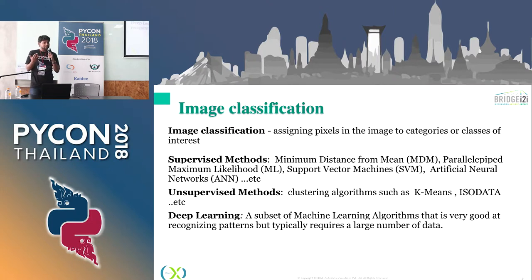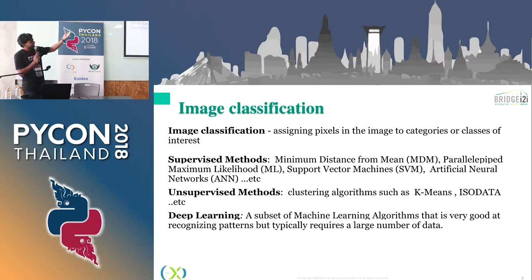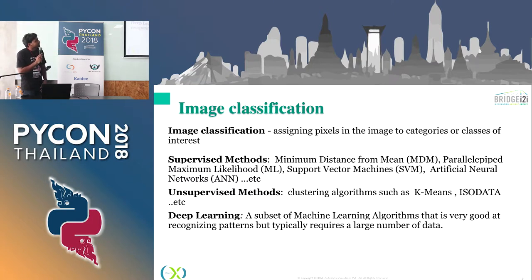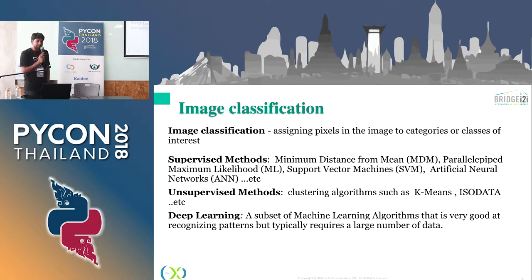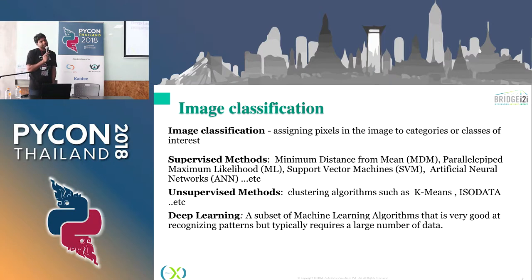Coming from the machine learning background, we generally have supervised methods and unsupervised methods. There are various kinds of methods we can use for image classification. Then comes deep learning. Deep learning is basically a subset of machine learning algorithms which mostly involve neural networks. In simple terms, neural networks that are deep enough — with more layers — are called deep neural networks. That's deep learning.